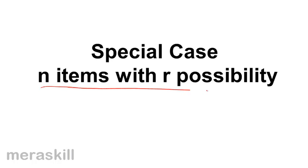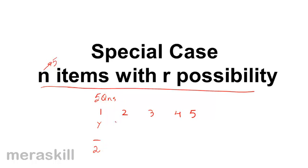We did selection with repetition in all these cases. Now we'll do a special case of n items with r possibilities. Suppose n is 5, so there are 5 questions: 1, 2, 3, 4, 5. The student is supposed to answer these questions. For each question, there are two possibilities — he may attempt it or not attempt it. This applies to all five questions.